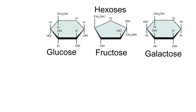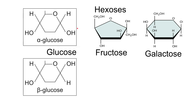For fructose and galactose, you only need to know their names and what they go on to produce. For glucose, you need to know a little more about its structure. There are two types of glucose: alpha glucose and beta glucose. The only difference between them is the arrangement of the hydroxyl group and the hydrogen atom bonded to carbon one. On alpha glucose, the hydroxyl group is at the bottom; on beta glucose, it is at the top.